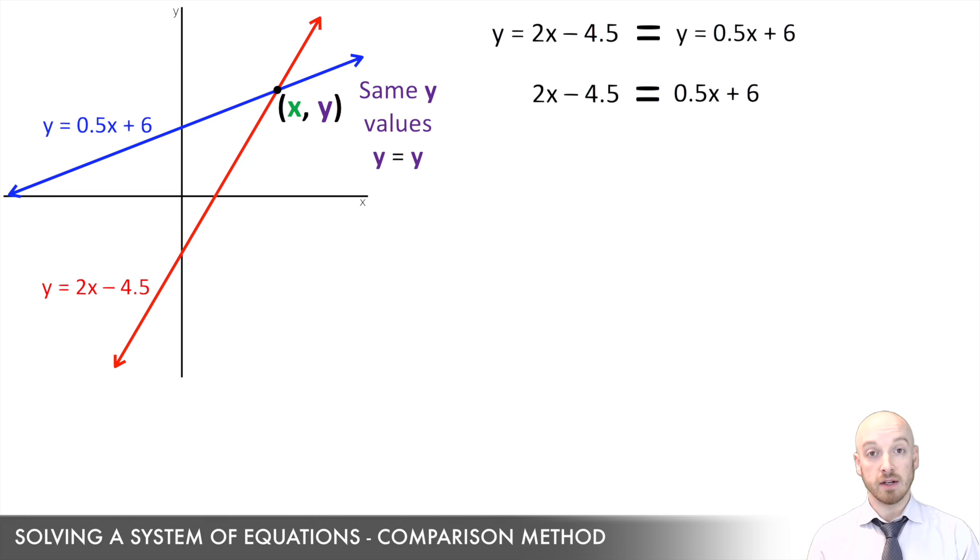And if I do some simple rearranging here, I can get the x by itself and get an actual value for x. This is going to be the x value in the solution to this system of equations. So what I'll do is gather my terms with x in it on one side of the equal sign, doesn't matter which one, although I usually send it to the left side. And remember, to gather my terms on one side, I have to get rid of them from the other.